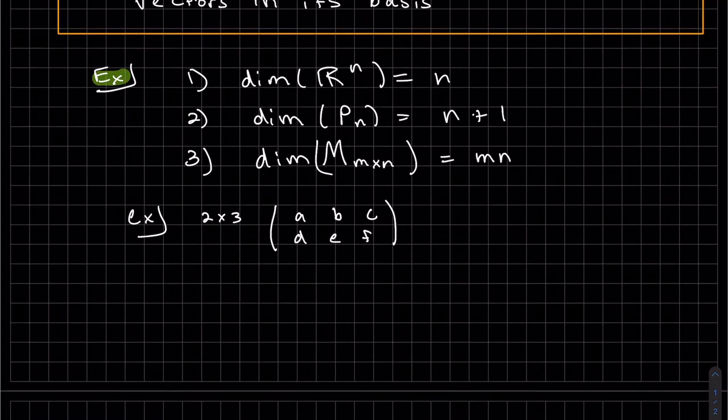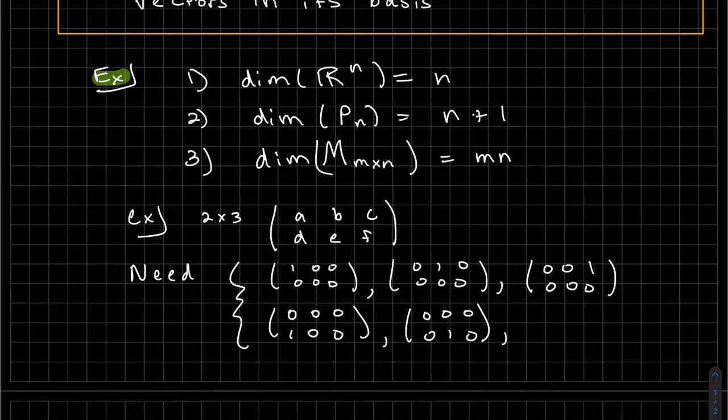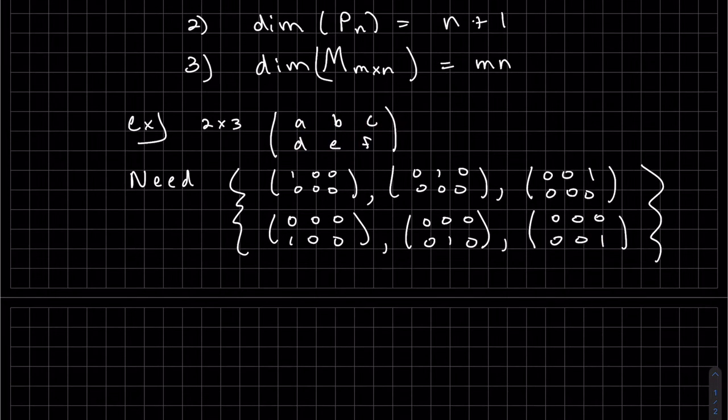So for this matrix, this 2 by 3 matrix, this is what we'll need for a bases. We'll need to represent this a, the b. These are the 6 that you see need to be represented for each of the letters in each of the positions. So we can see there's 6 in this basis, so that's our dim.